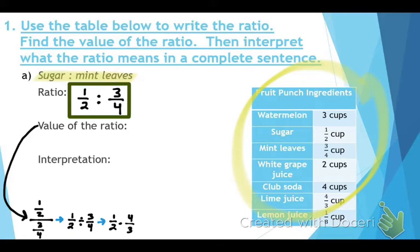Check if you can cross-reduce. The two and four become a one and two. When you multiply that out, you get two-thirds. So the value of our ratio is two-thirds.